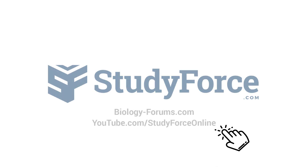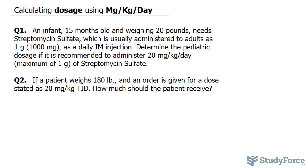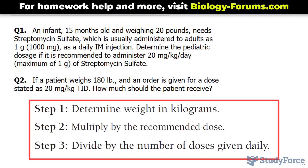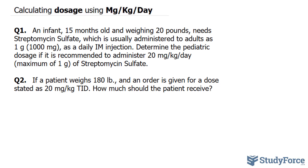In this tutorial, I'll show you how to calculate dosage using milligrams per kilograms per day. Sometimes you might get a dose stated in the manufacturer's information as milligrams per kilograms per day. This means we calculate the patient's weight in kilograms, multiply the recommended dose, and take into account the number of times per day the dose is to be given. The goal is to determine how many milligrams can be given in each dose.